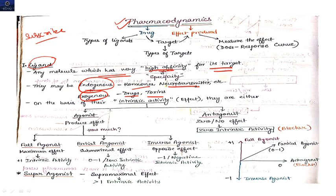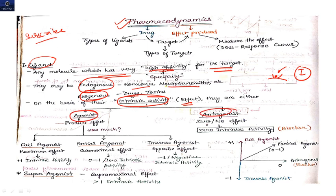On the basis of their intrinsic activity — meaning their effect — ligands are classified. When a drug comes and binds to a receptor, that binding is called affinity, and the effect it produces is known as intrinsic activity. On this basis, drugs are either agonists or antagonists. Antagonists have zero or no effect — that is, zero intrinsic activity — and are generally known as blockers.